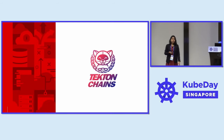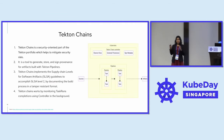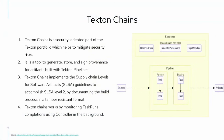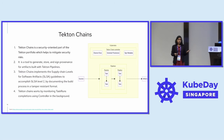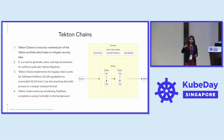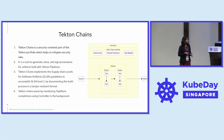Tekton Chains — what is this? Everywhere we're hearing about SLSA, and we want to secure our pipeline run in every possible way. In Tekton that is possible using the project called Chains. What Chains does is it signs or does end-to-end attestation for your pipeline run as well as signs the image. These two operations are done by Chains today. It is either key-based or keyless, and underneath it uses Cosign. The Tekton Chains controller continuously watches for pipeline runs and task runs, and once those complete, Chains does the signing of the image or signing attestation to the pipeline run.